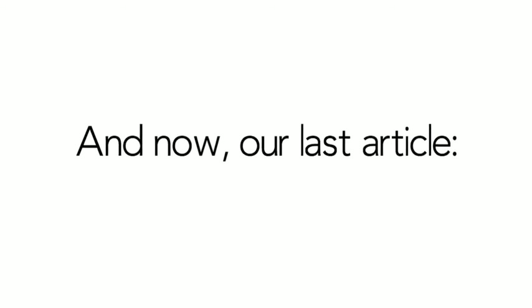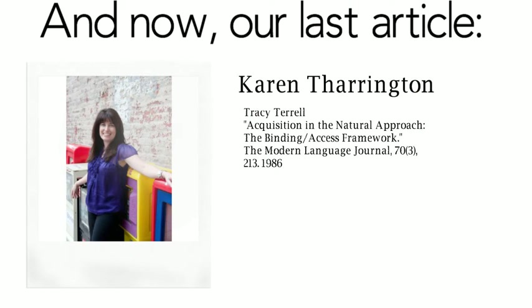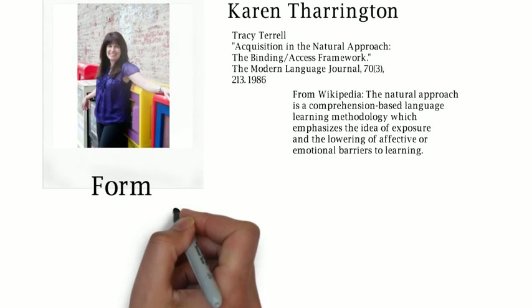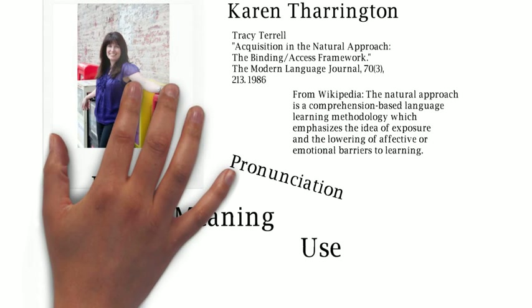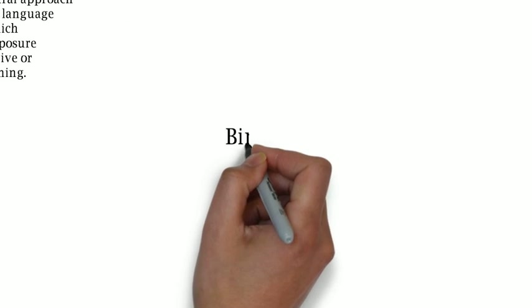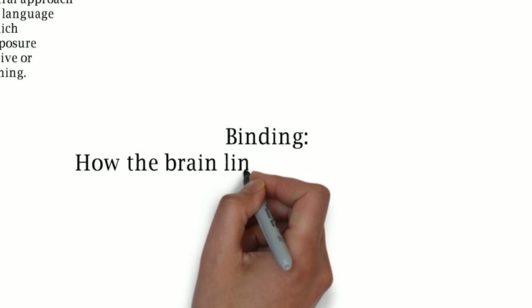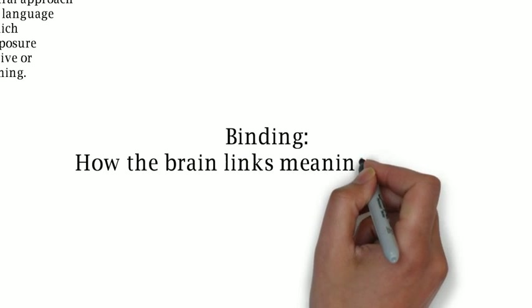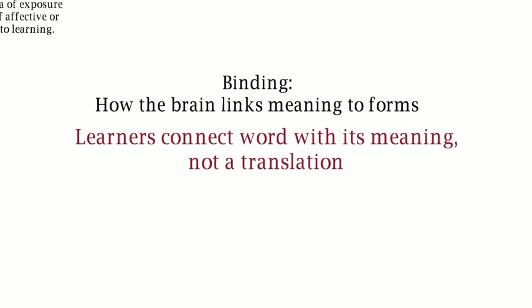Wilkins argues that, while without grammar very little can be conveyed, without vocabulary nothing can be conveyed. However, there are many steps that go into knowing a word, including form, meaning, and use. How is a word pronounced? In what context is it used? What other words occur with this one? Second language acquisition theorist Tracy Terrell advocated for binding when learning languages, a term used to describe the brain's process of linking meaning to forms. This occurs when learners connect a new word with its meaning, not a translation.